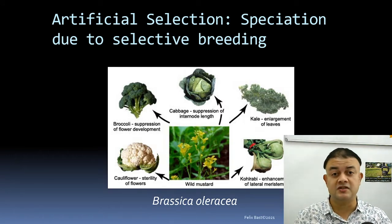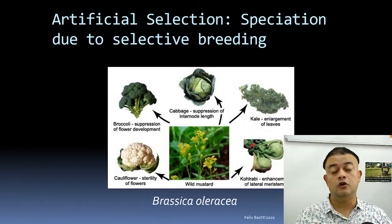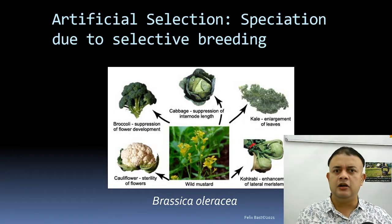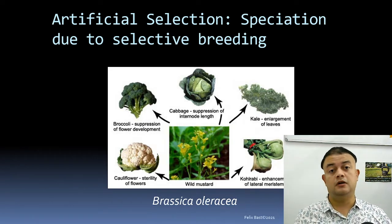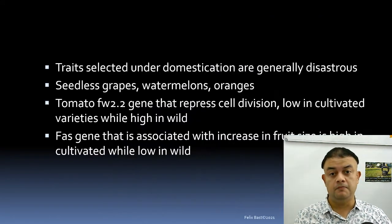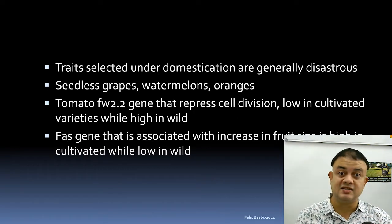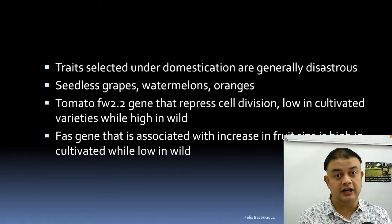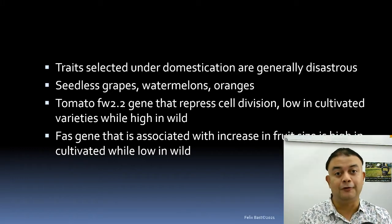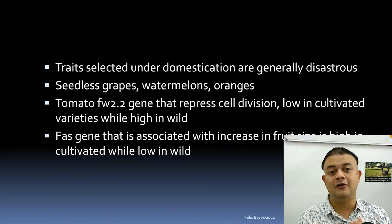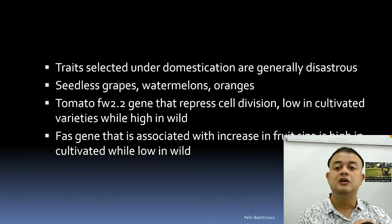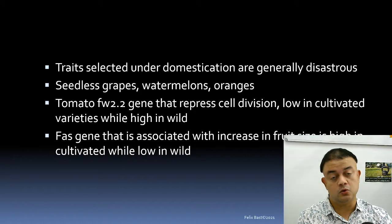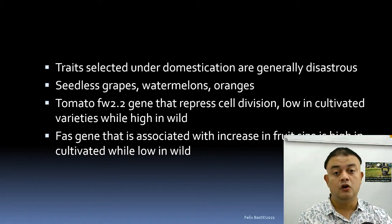Subspeciation through artificial breeding is very common. We have thousands of rose breeds with all sorts of names. Similarly, dog pedigrees and cat breeds, and domesticated animals like cows have many breeds — all because of artificial selection through selective breeding. Traits selected under domestication can be generally disastrous for the organism — for example, seedless grapes have no seeds, which makes no biological sense for the plant.